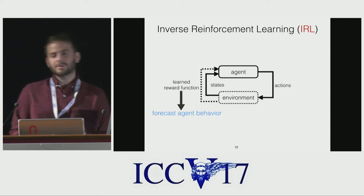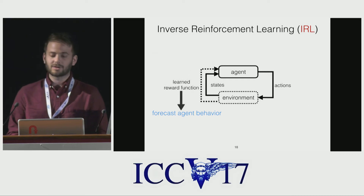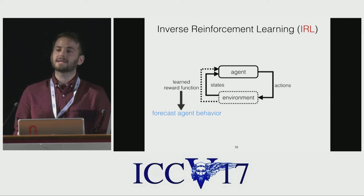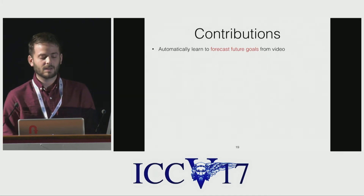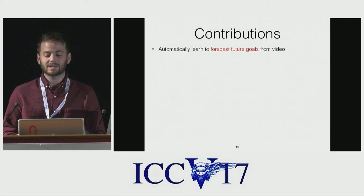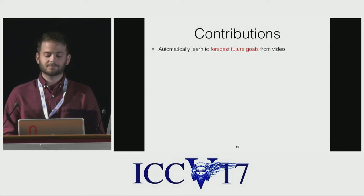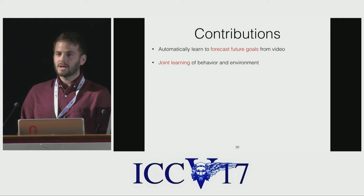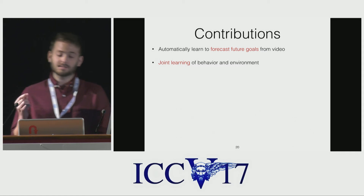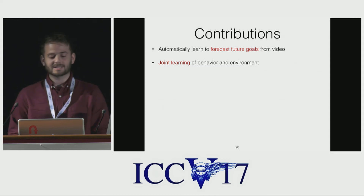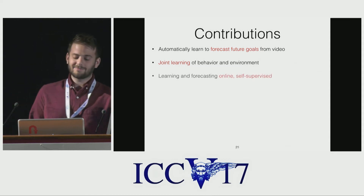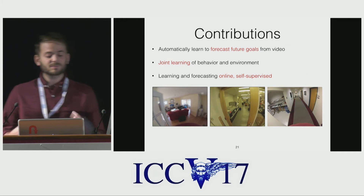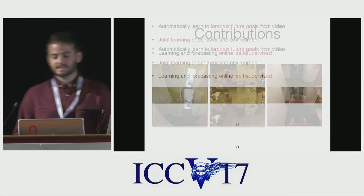Both IRL and RL assume access to the environment. In order for our IRL approach to forecast without access, we must instead build a representation of the environment. We designed an inverse reinforcement learning approach for the task of predicting the goals of a first-person camera wearer. We jointly learn behavioral and environmental models, whereas other IRL approaches assume the environment as prior knowledge. Our method learns and forecasts online in a self-supervised fashion.